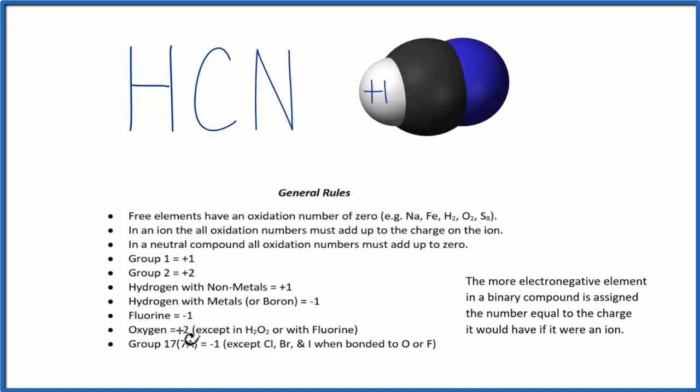We don't see either carbon or nitrogen in our rules. So when that's the case, the most electronegative of the two will be assigned the number equal to the charge it would have.